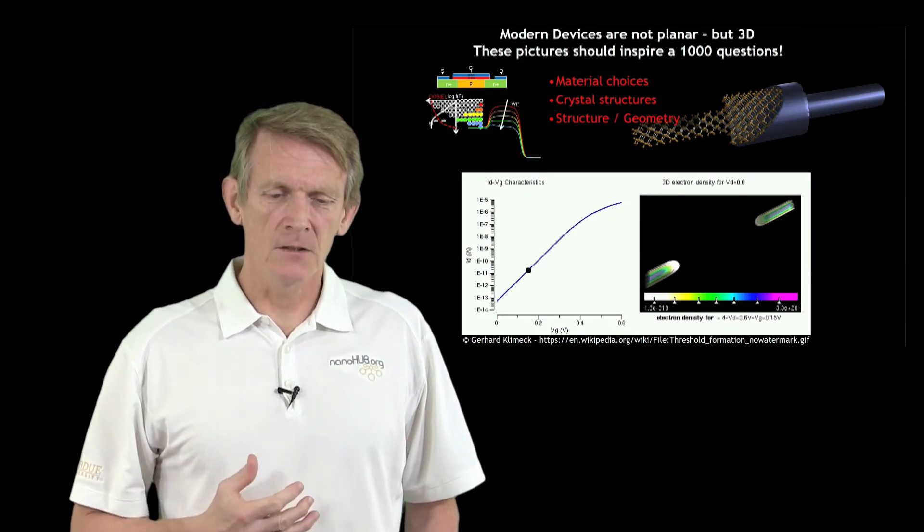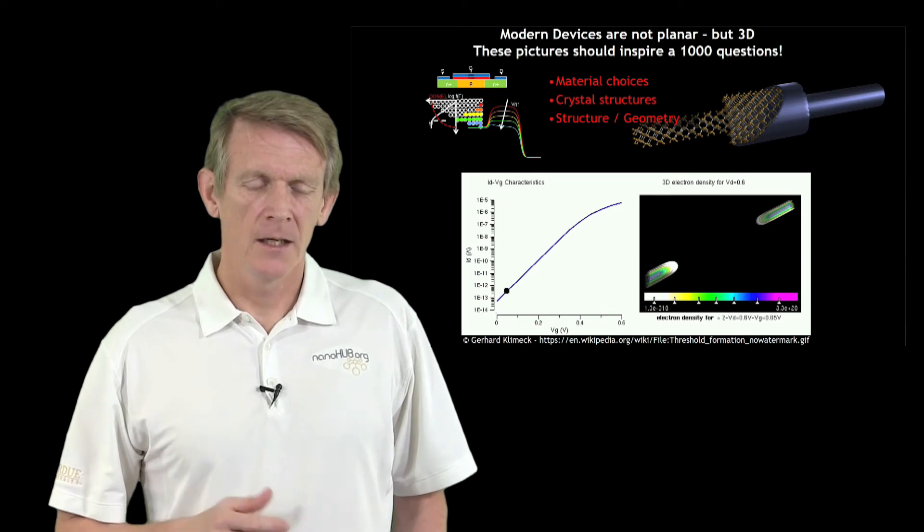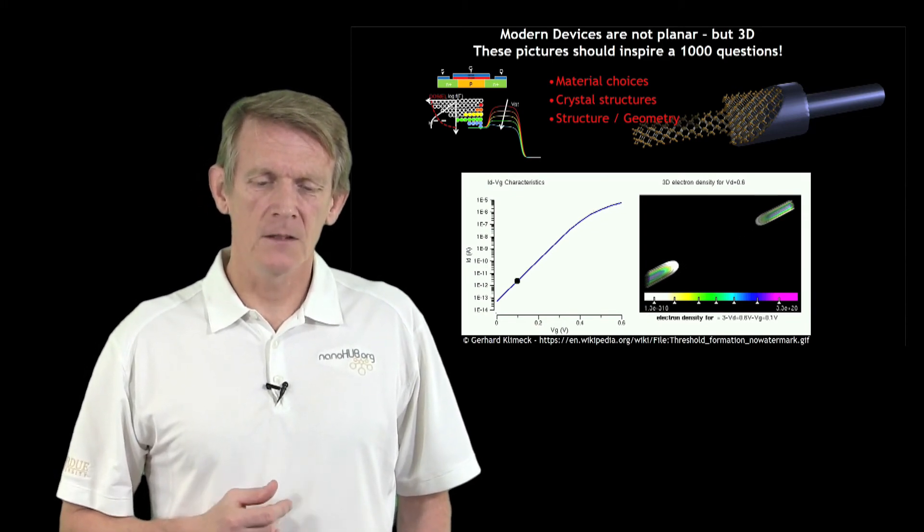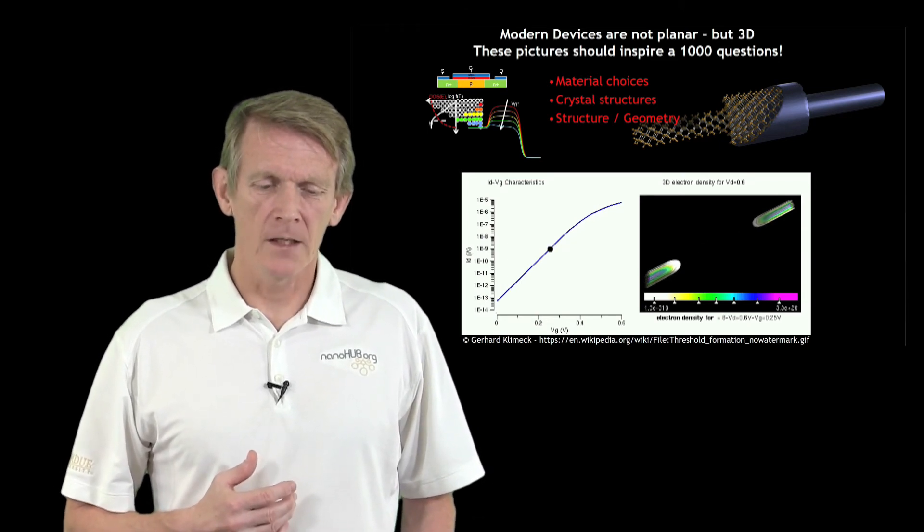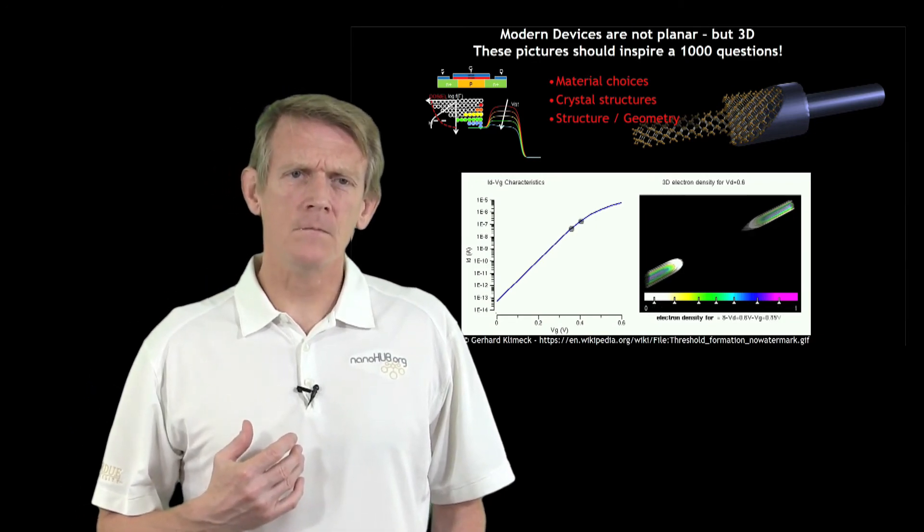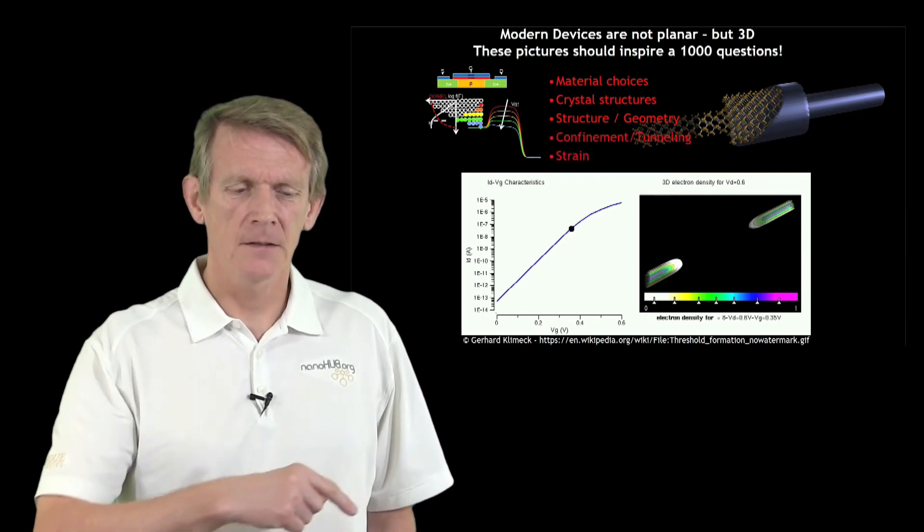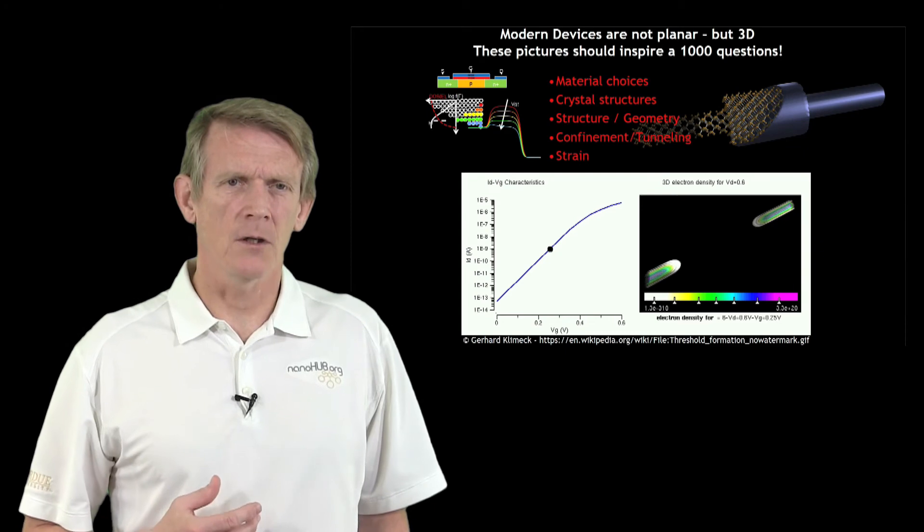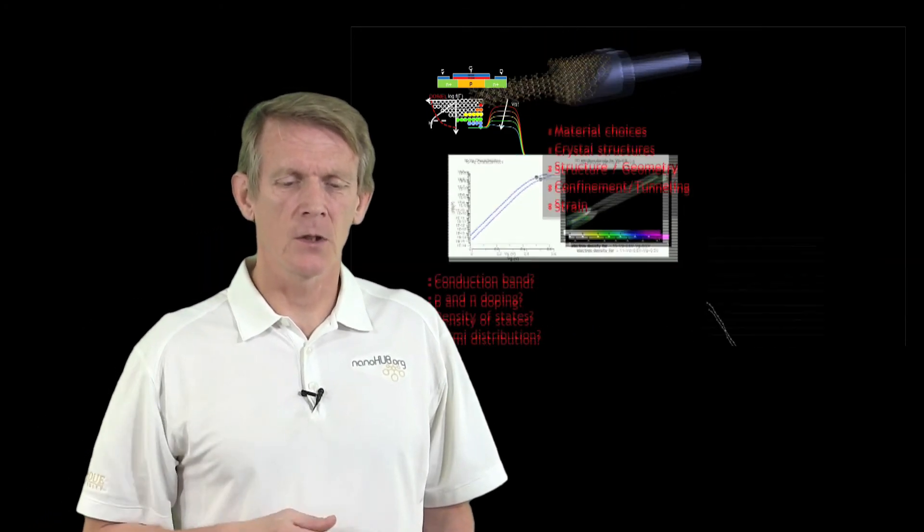Since we have three-dimensional devices, we have modes - quantum mechanical modes. Here's an animation of the electron density in a nanowire. As the wire is turned on by a gate, you can see how electrons are starting to conduct throughout the device. If you have that, there's confinement. We'll talk about tunneling effects, strain - concepts we'll touch throughout the course.